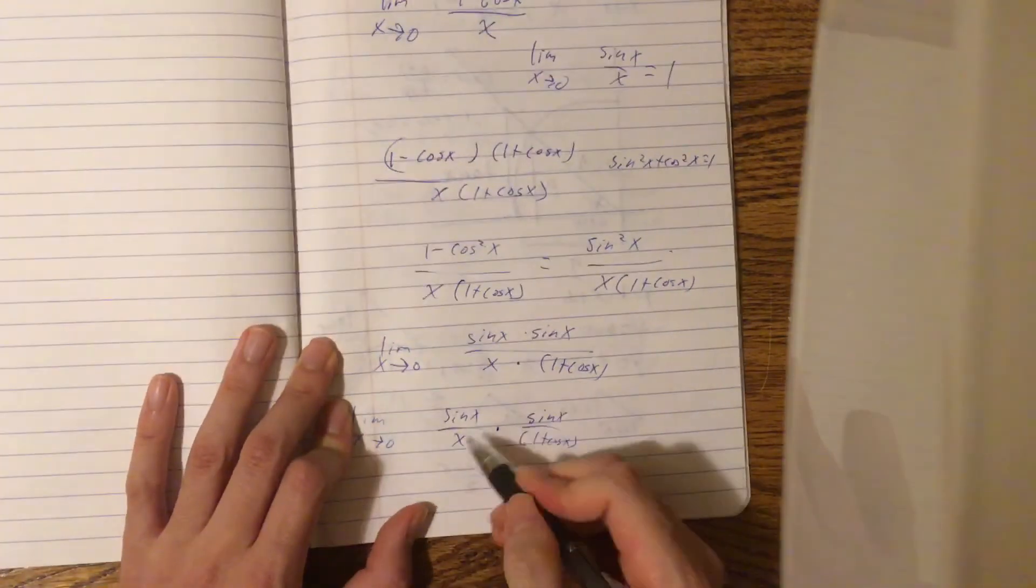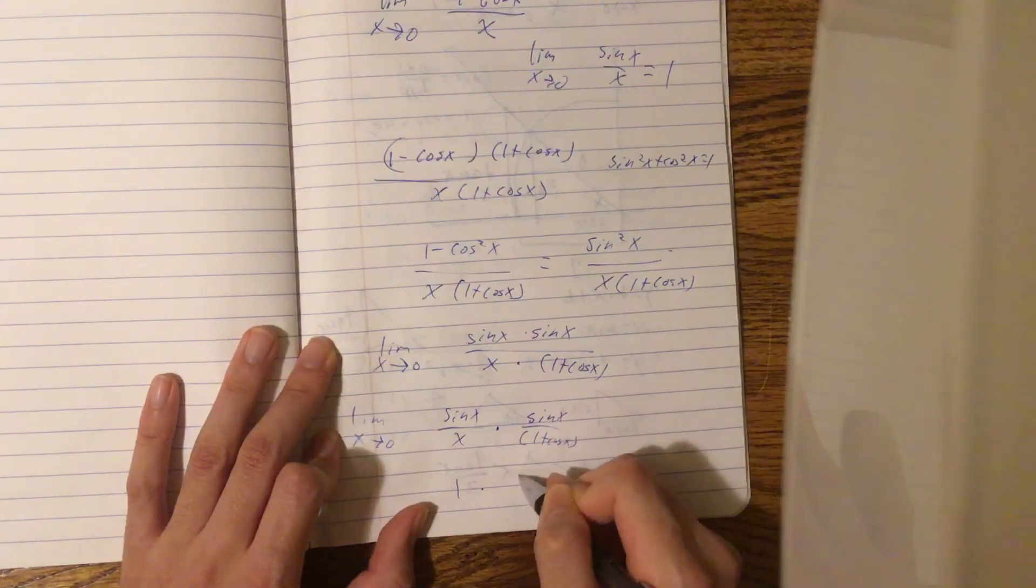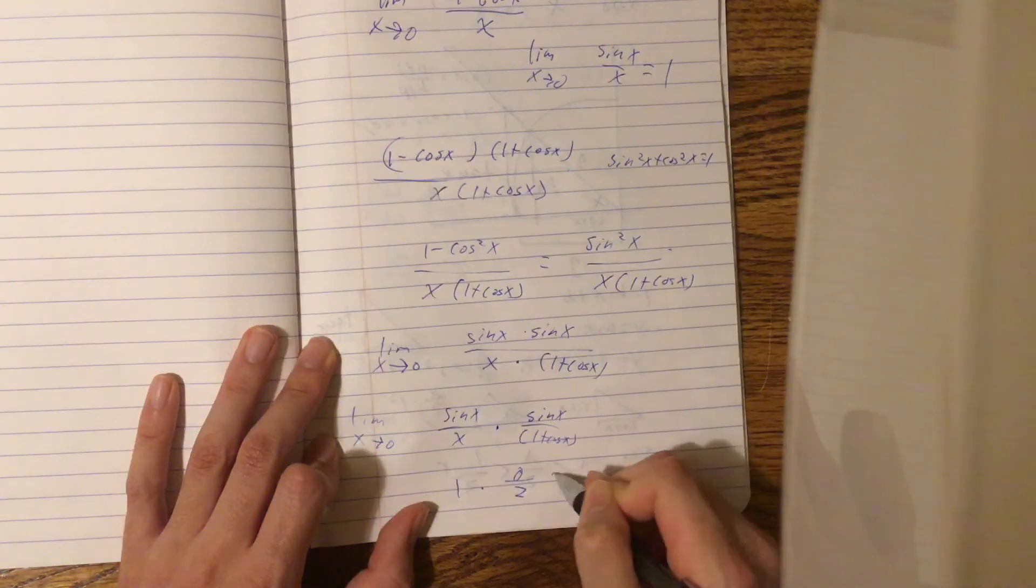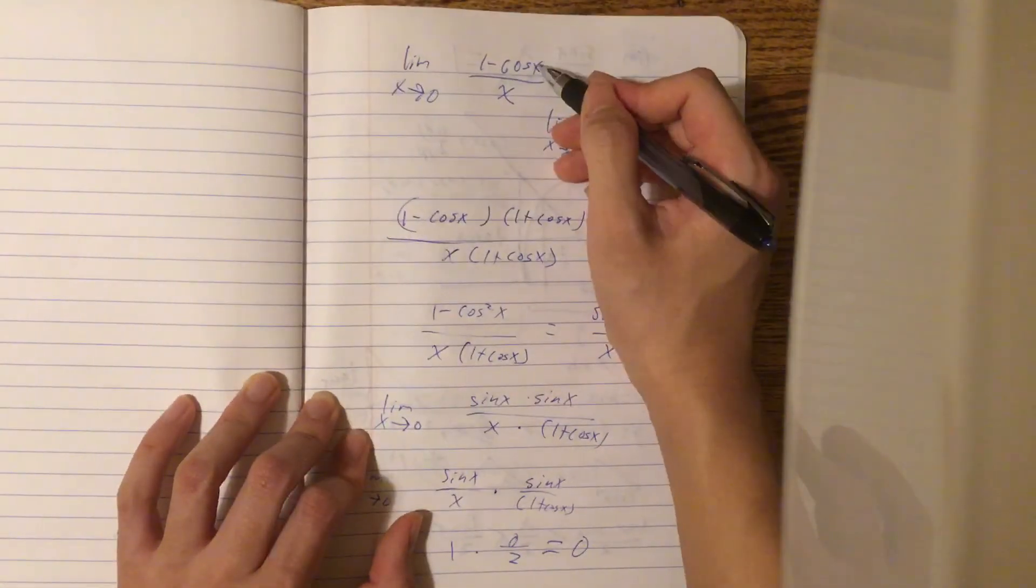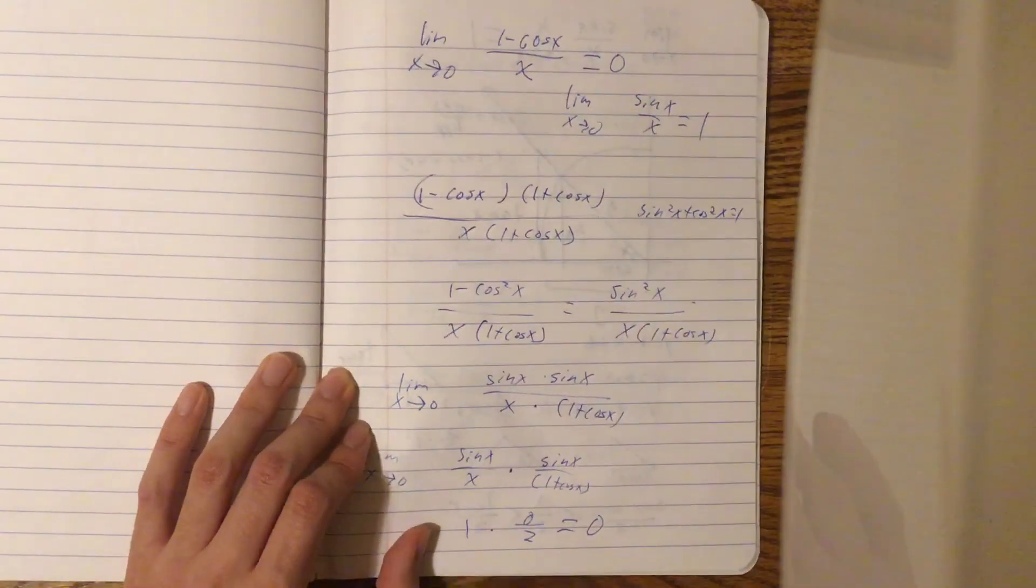And finally, we get that. This is 1 times sin 0, which is 0, over 1 + cos 0, which is 2. This equals 0. So the limit of (1 - cos x)/x as x approaches 0 equals 0. Thank you.